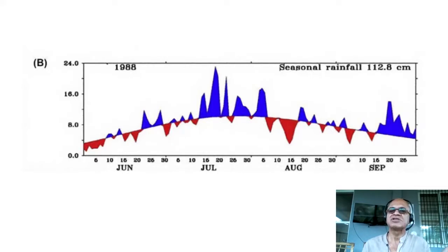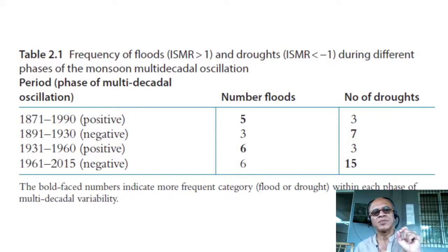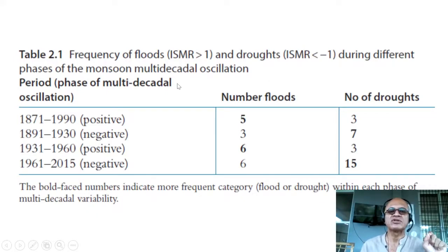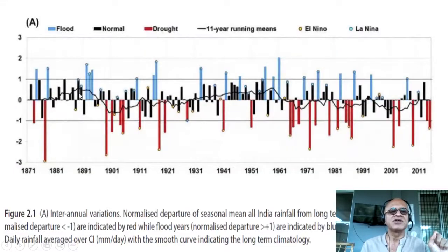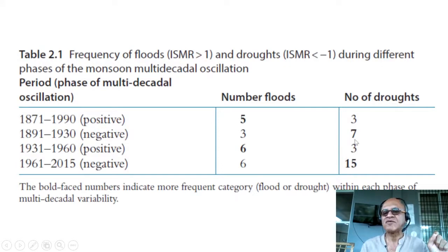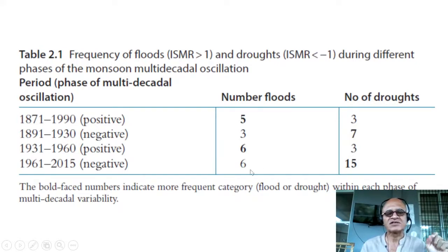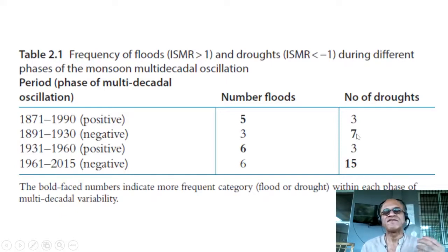We now know there is sub-seasonal or week-2-to-4 predictability, which gives us a time window to look for extremes. Looking at the frequency of floods and droughts during different phases of the monsoon multi-decadal oscillation across different periods: in a positive multi-decadal phase you expect more floods than droughts, and vice versa in a negative phase. The number of droughts in the recent negative phase is larger than anything seen in any previous phase of the multi-decadal mode, which is something we have to worry about.